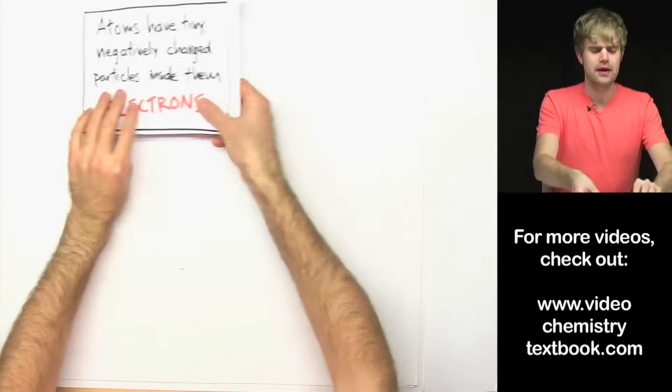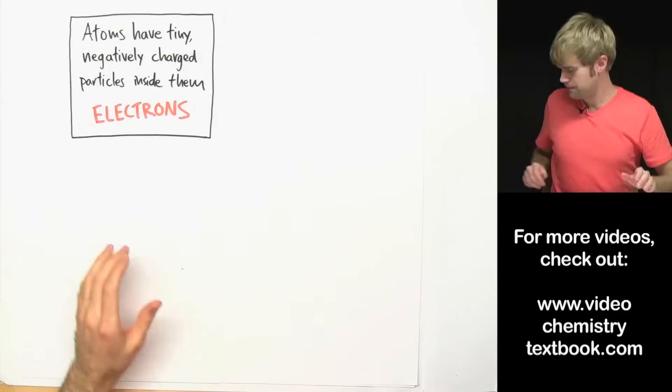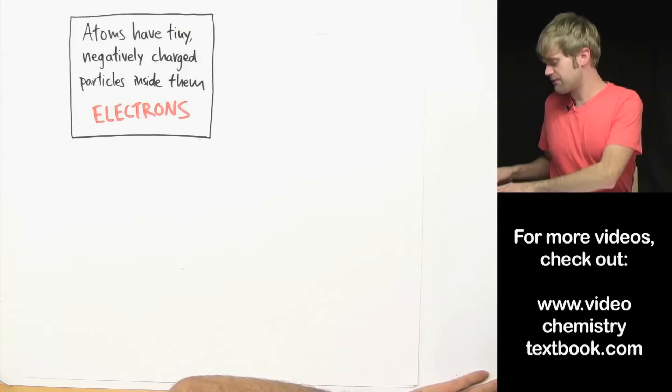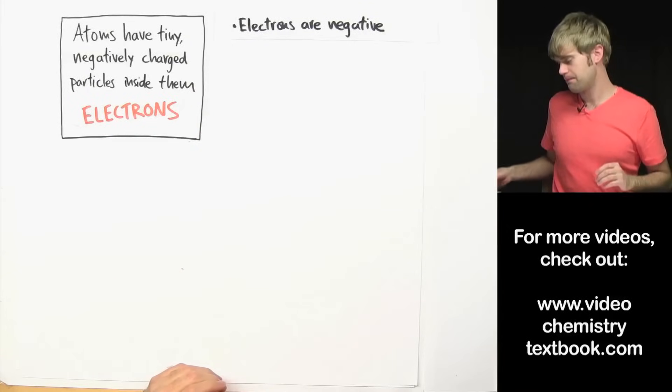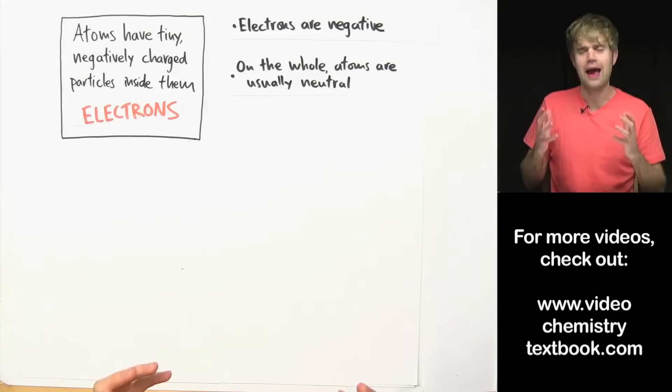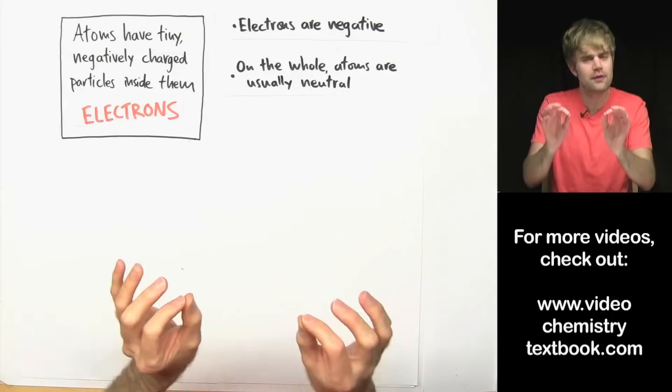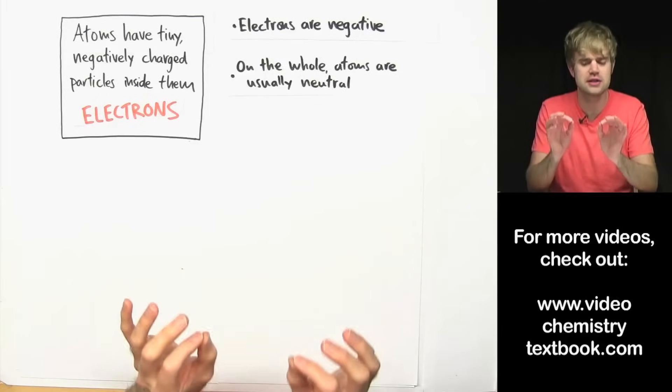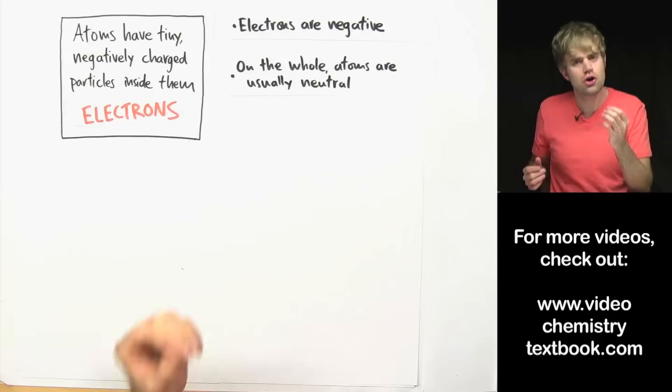So, here is the model of the atom that Thompson comes up with. He realizes, first of all, that electrons are negative. We already talked about that. But then he notices that on the whole, atoms in general are usually electrically neutral. So even though they have these negatively charged electrons inside them, the atoms as a whole don't have a charge.